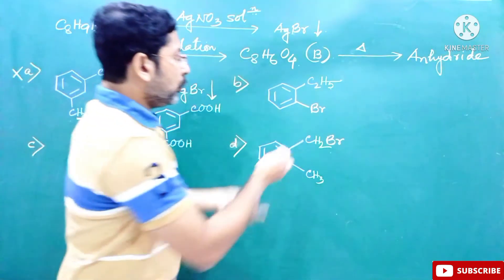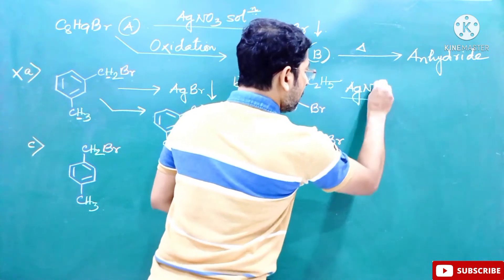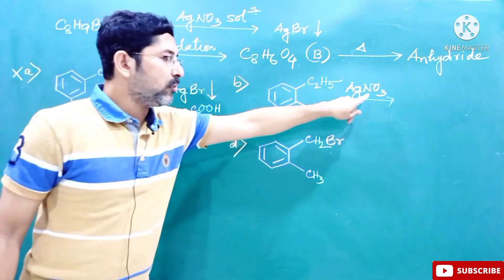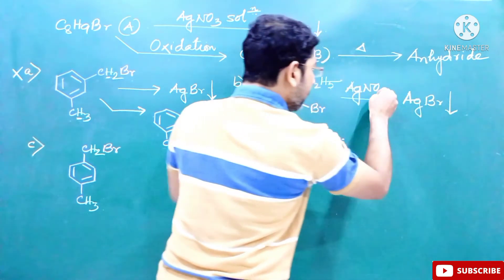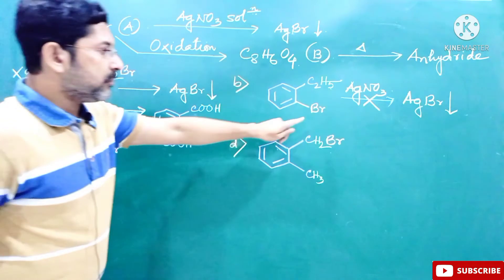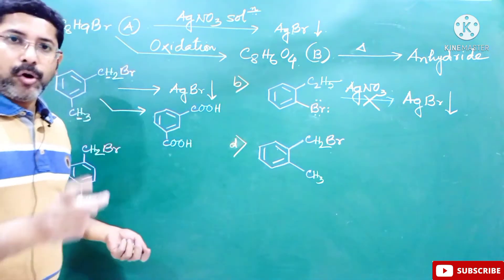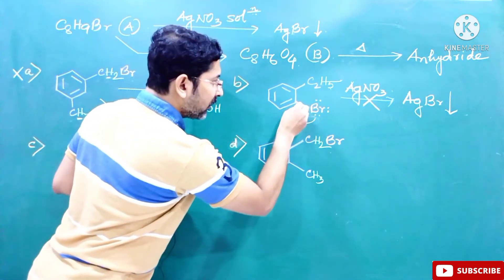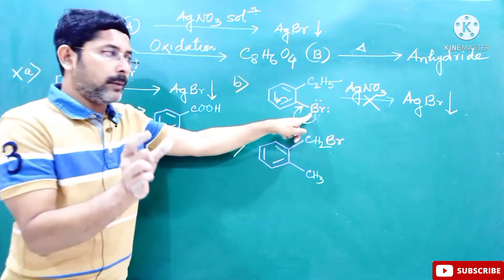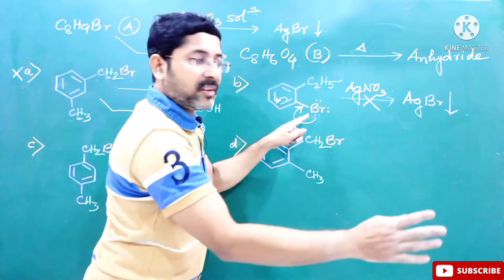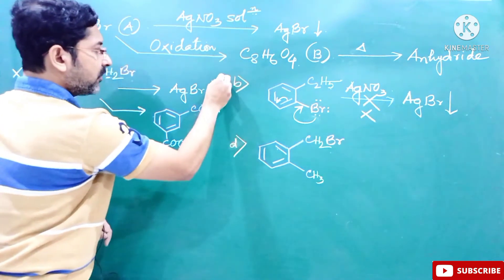In case of compound B, on reaction with silver nitrate it will not give a precipitate of silver bromide. Silver bromide precipitation will not occur because this bromine will not leave the substrate — the phenyl carbocation formed would be very unstable. On top of that, the positive mesomeric effect operates, giving the C–Br bond some double bond character, so Br minus will not leave. This reaction will not occur, so this is not the correct option.